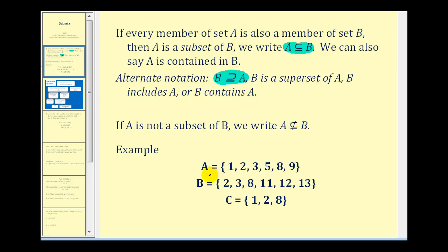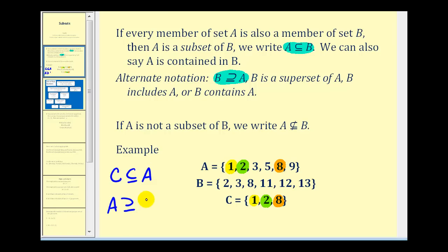Looking at sets A, B, and C, notice that all of the members of set C are also members of set A. One is in both sets C and A, two is in set C and A, and eight is in set C and A. So we can say that C is a subset of A.